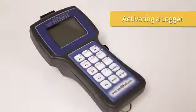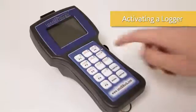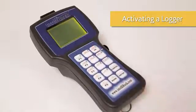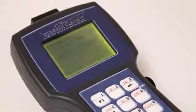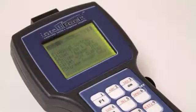To activate a logger, turn on your reader by pressing the ON button in the upper right-hand corner. The screen will display the IntelliRock logo, followed by the current time, then the main menu.